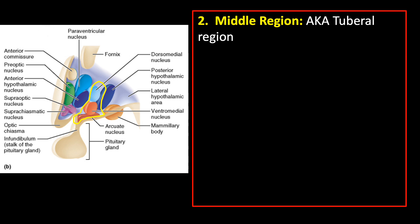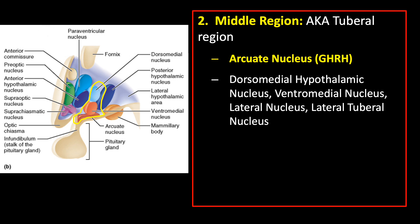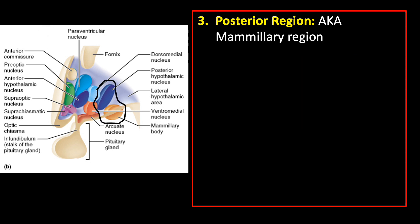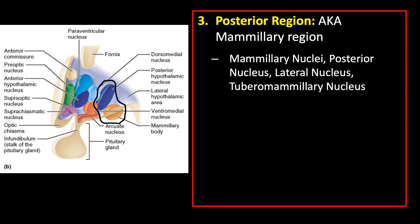The middle region is also known as the tuberal region. It contains the arcuate nucleus, which produces growth hormone-releasing hormone. The last region is the posterior region, also known as the mamillary region, which contains several additional nuclei.